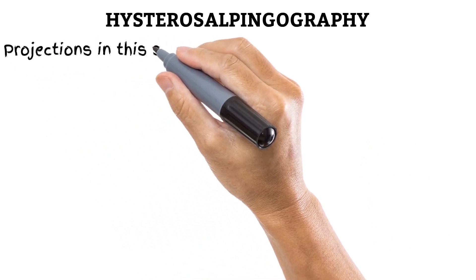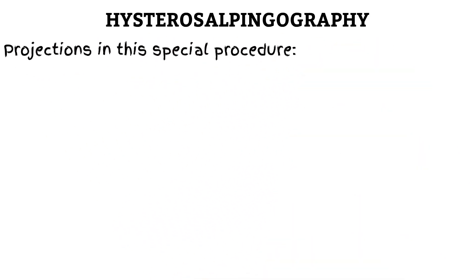Before we start, let us remind you that this is a special procedure involving two or more images at different stages. Even though these images look different due to contrast media, the positioning used is the same set of projections you have been taught in radiographic positioning. To keep these videos short, we will not be discussing positioning and centering points. At the beginning of each video, we'll provide a list of projections used. If you are not familiar with a listed projection, read about it in your positioning textbook before moving further.